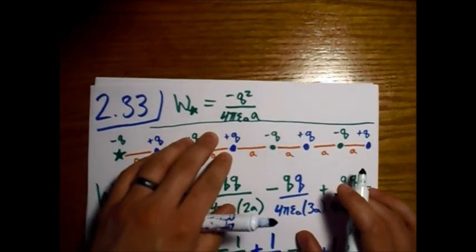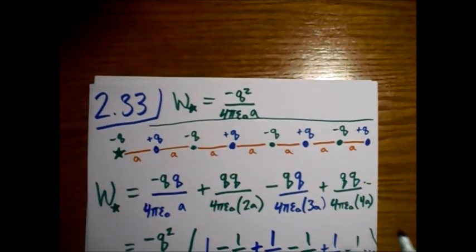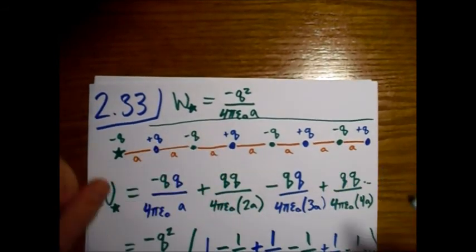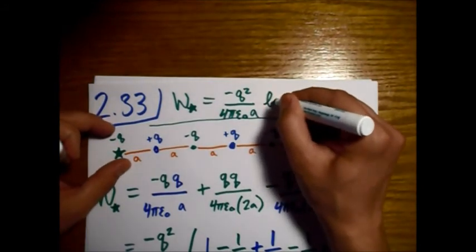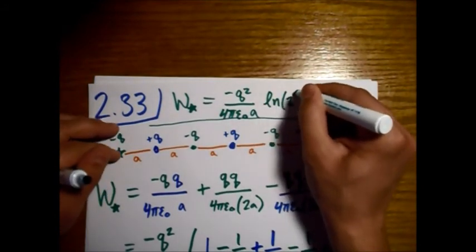Minus q squared over 4πε₀a. I hope this is all readable. And then we have alpha, which is the natural logarithm of 2.